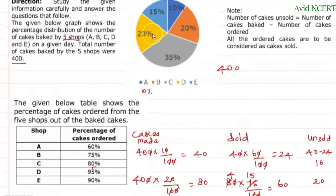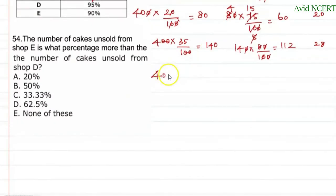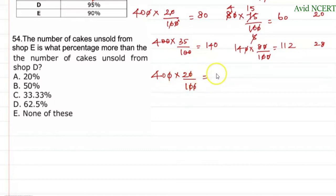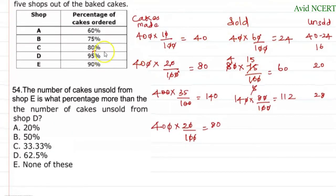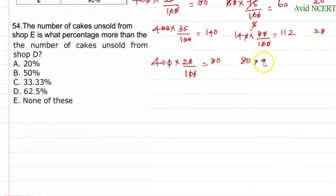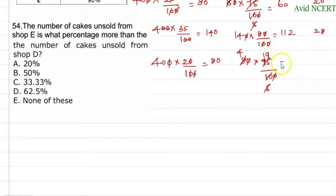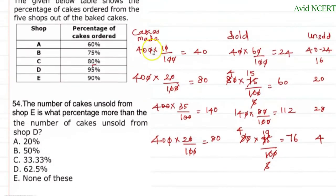For shop D: 20% of 400 = 80 cakes made. You can find this as 10% is 40, so 20% is 80. The percentage of cakes sold is 95%, so cakes sold = 80 × 95/100 = 76. Therefore unsold cakes = 80 − 76 = 4.